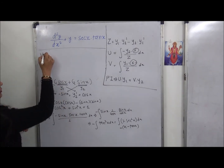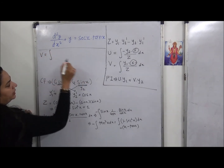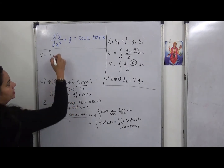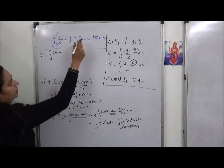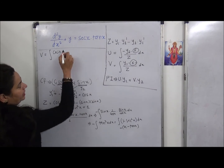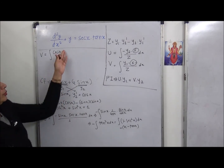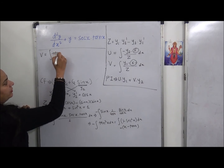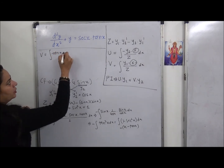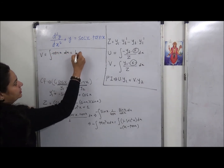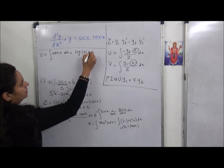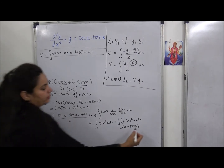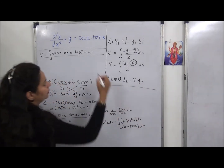Coming to v: v = ∫ y1 · X / z dx = ∫ cos x · sec x · tan x dx. Since sec x = 1/cos x, cos x and cos x cancel, leaving ∫ tan x dx. The integration of tan x is log|sec x|. So v = log|sec x|.